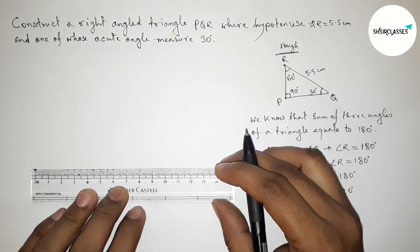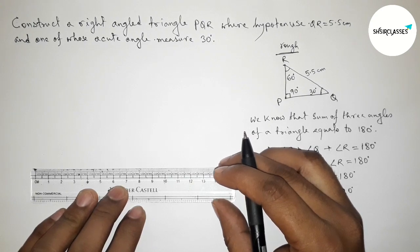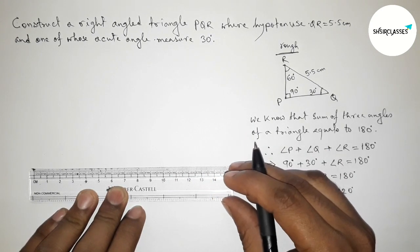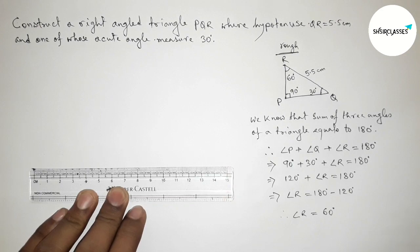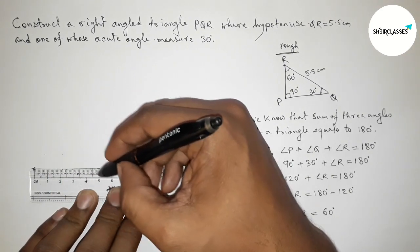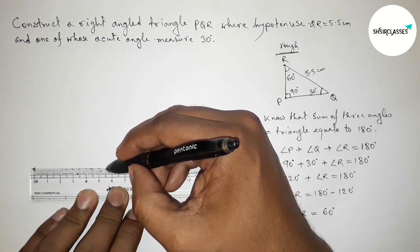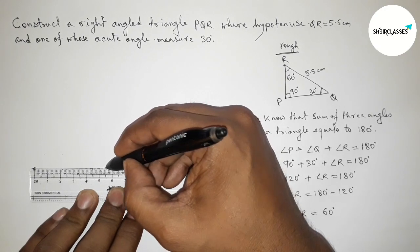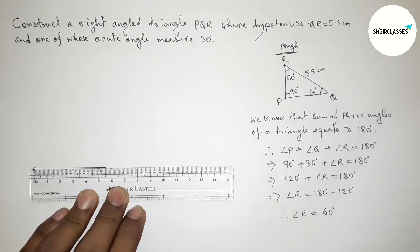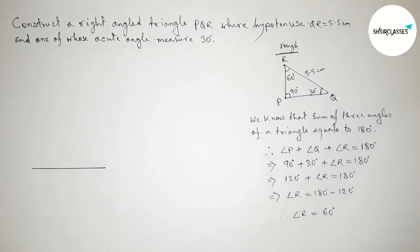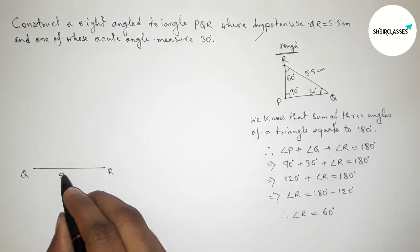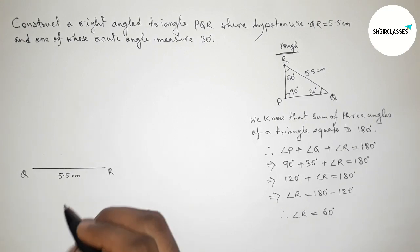First of all, drawing the given hypotenuse QR equals 5.5 centimeters. Starting from 0, this is the 5.5 centimeter line segment. Marking point Q at one end and point R at the other end — this is 5.5 centimeters.